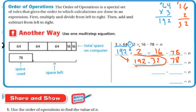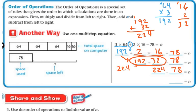Now I add and subtract from left to right. So 192 plus 32: 2 plus 2 is 4, 9 plus 3 is 12, regroup, 1 and 1 is 2. So 224. Now 224 minus 78: I have to regroup. 14 minus 8 is 6, 11 minus 7 is 4, and then 1. So the answer is 148. Same answer as before, but using order of operations.